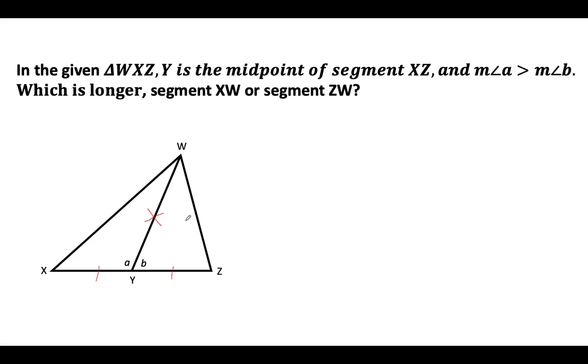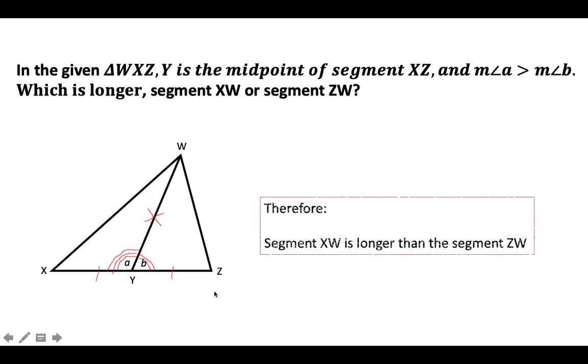Now to identify which one is longer, it is the angle that will determine. So since we have a given here that angle A is longer compared to the measure of angle B, we can say that the segment XW is also longer than the segment ZW, and that is by Hinge Theorem.